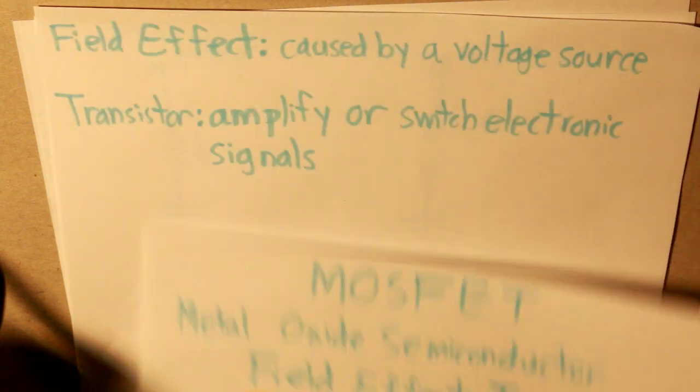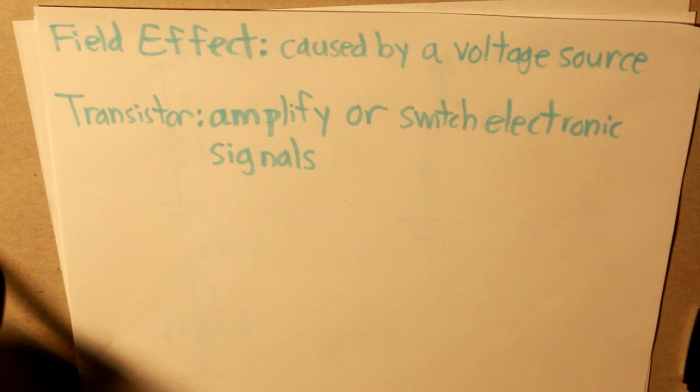So first, let's define what those terms mean. A field effect basically means that something is caused by a certain voltage source. So depending on the magnitude of a voltage, it would do something externally.